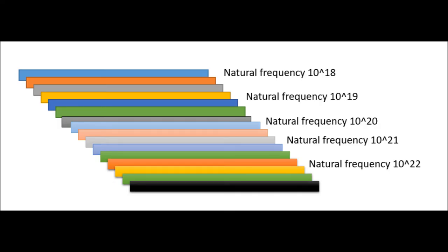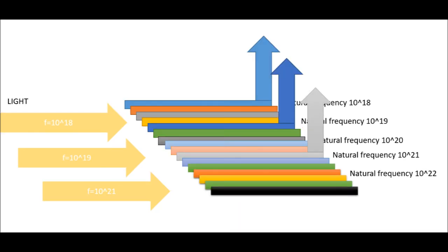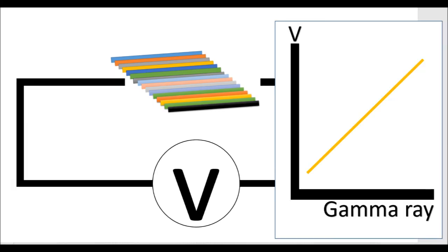We put them together like this. By the photoelectric effect, the higher the light frequency, the more electrons get away from the metal, just like the picture. Put it in the electrical circuit and we can get the voltage from it. When the light intensity increases, the voltage may increase.